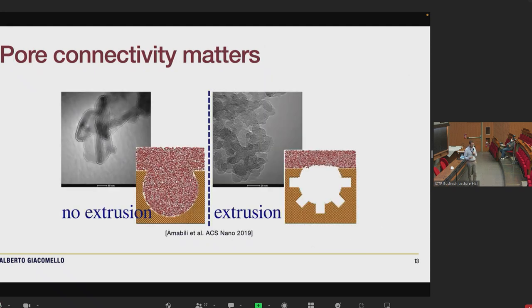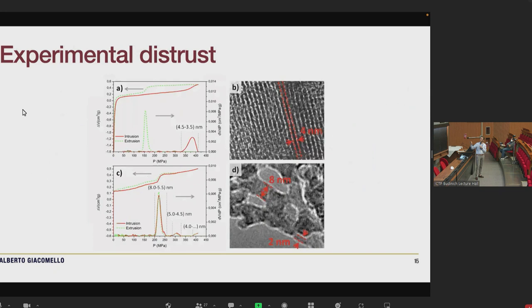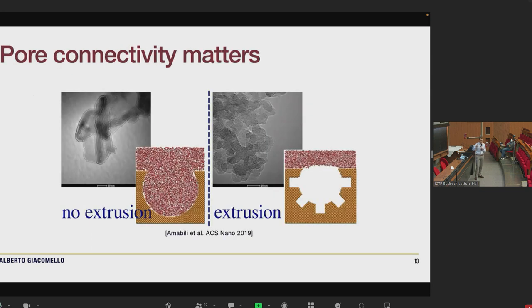Now we come to a different constructive parameter that we can use to tune dissipated energy, which is how pores are connected. An experimental friend of ours came to us saying, look, we have two materials. The one on the left has semi-independent pores of six nanometers. The one on the right has roughly the same size but the pores are interconnected. One exhibits extrusion and one does not exhibit extrusion at all. What is the explanation? The nominal size is the same but the behavior is entirely different.